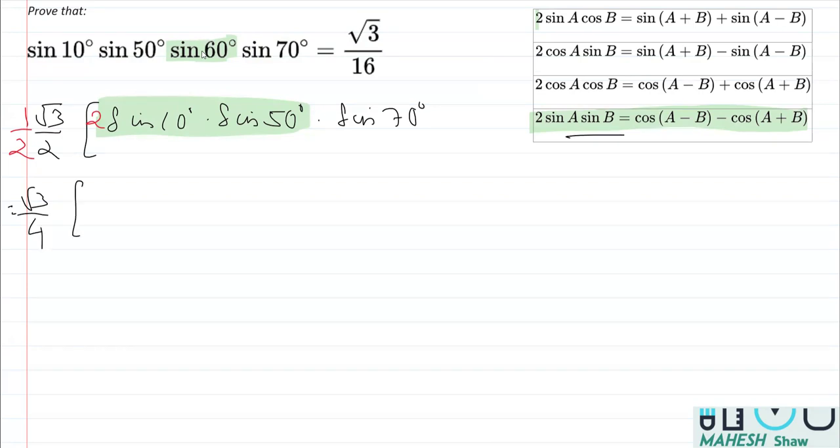Now, if I apply this identity, so it's cos A minus B, that is cos 40° minus cos 10° minus 50°, that is cos minus 40° minus, from here, that's minus cos A plus B and A plus B 60°. So it's going to be cos 60°. Let's enclose them in a bracket, that multiplied by sin 70°.